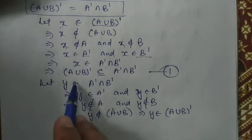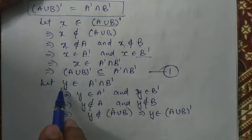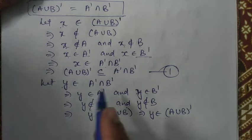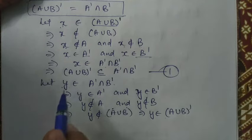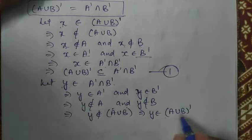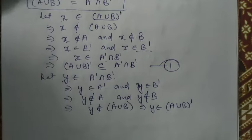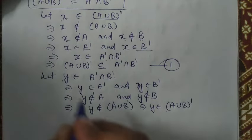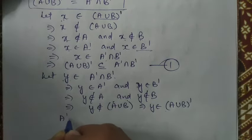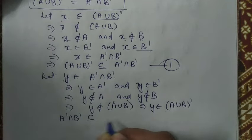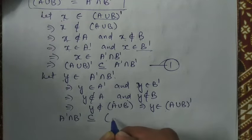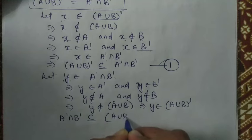So if an element Y belongs to A complement intersection B complement, then that element Y will also belong to the complement of A union B. This means A complement intersection B complement is a subset of the complement of A union B.